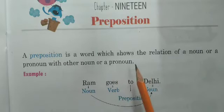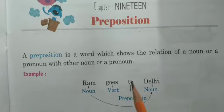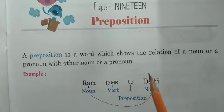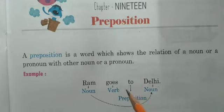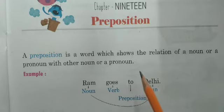Means — isthan, samay, disha, adi ke sanket ke liye sangya ya sarvnaam se pehle jo shabd prayog kiye jate hai, unhe preposition kaha jata hai.